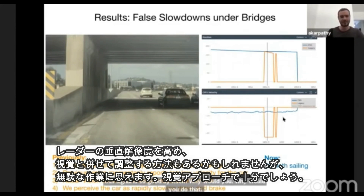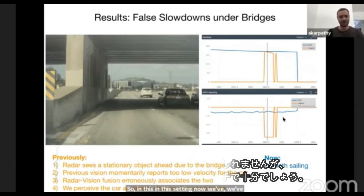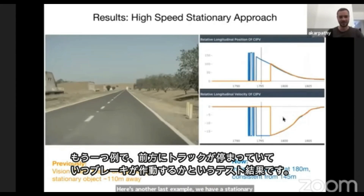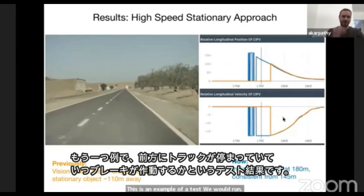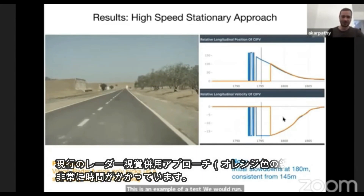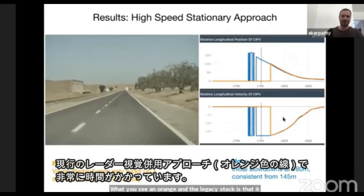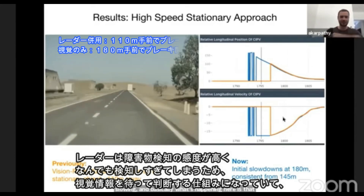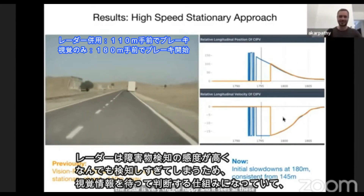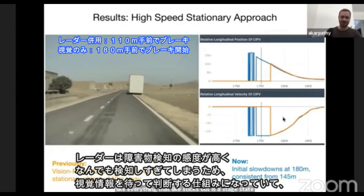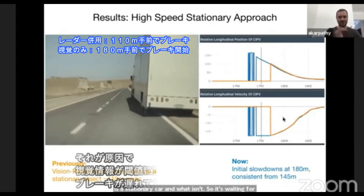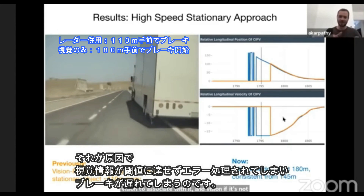In this setting, we've improved the situation quite a lot. Here's another example: a stationary approach in a track testing environment. We are approaching this vehicle and hoping to stop. What you see in orange in the legacy stack is that it takes quite a bit of time to start slowing. What's happening is that the radar is very trigger-happy and sees all these false stationary objects everywhere — everything that sticks out is a stationary target. Radar by itself doesn't know what actually is a stationary car, so it's waiting for vision to associate with it. And vision, if it's not held to a high enough bar, is noisy and contributes error, and the sensor fusion stack just picks it up too late.